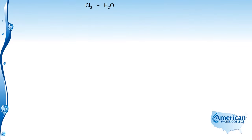When pure chlorine is added to pure water, it reacts to form hypochlorous acid and hydrochloric acid. Hypochlorous acid is one of the two forms of chlorine in a free chlorine residual. When the hypochlorous acid dissociates in water, it forms the other form of free chlorine, which is called the hypochlorite ion.